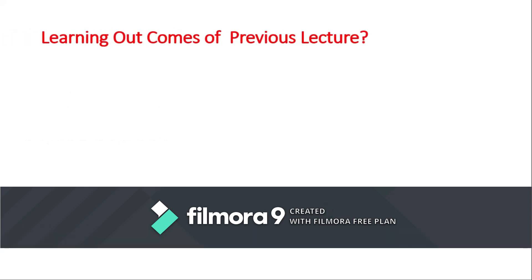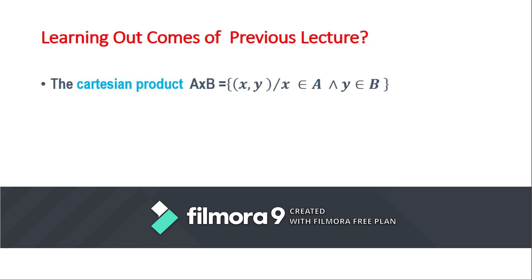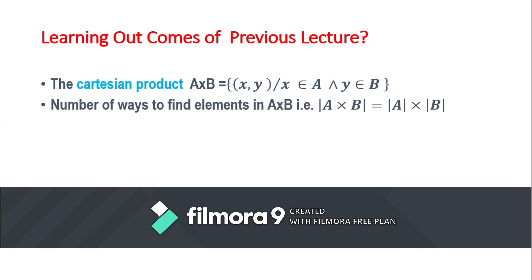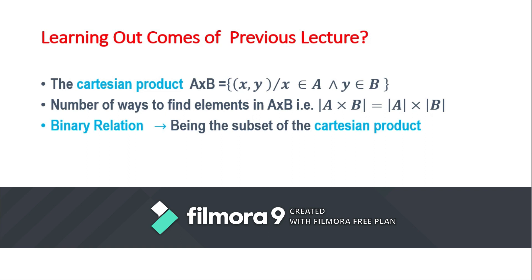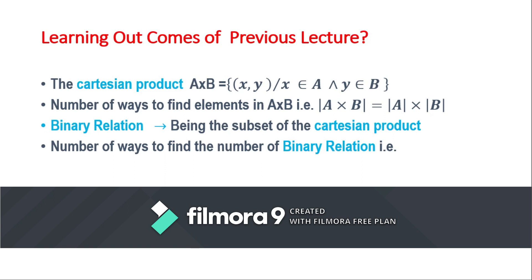In the previous lecture, we learnt about the Cartesian product — a set consisting of ordered pairs, where the first element belongs to the first set and the second belongs to the second set. The number of elements in A cross B equals the number of elements in A multiplied by the number of elements in B. We also covered binary relations as subsets of the Cartesian product, and the number of binary relations using the formula 2 to the power k1 times k2, and 2 to the power k2 respectively.